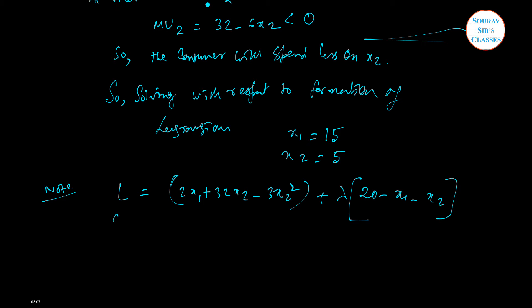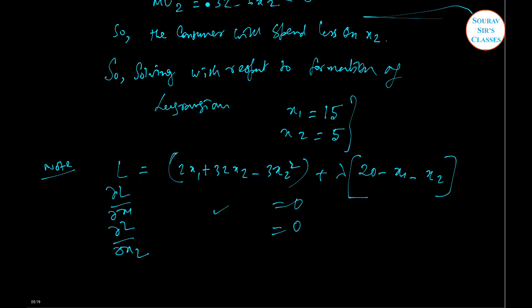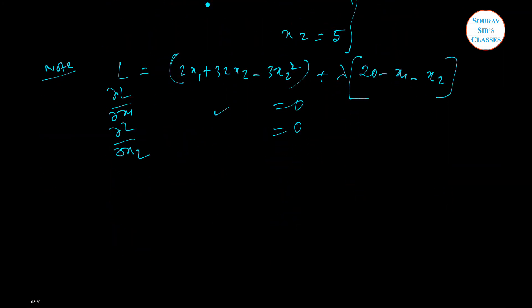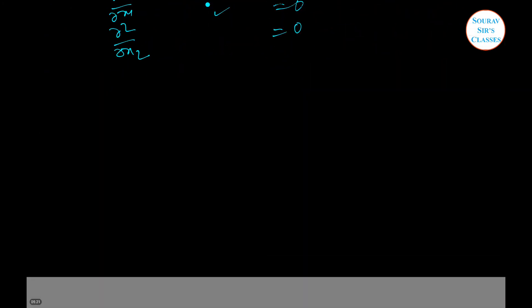Setting each partial derivative equal to zero and solving, we get x1 equal to 15 and x2 equal to 5 as the optimal consumption bundle for part A.